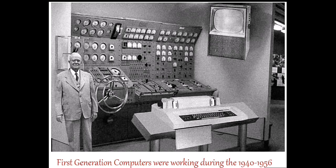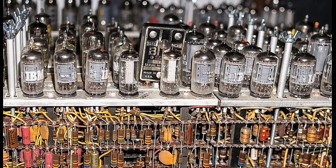During World War II, a special machine called Colossus was built in England. It was used to crack the code of the wireless messages of the German army. In 1945, two American engineers used vacuum tubes to build ENIAC — Electronic Numerical Integrator and Computer — the first electrical calculating machine.